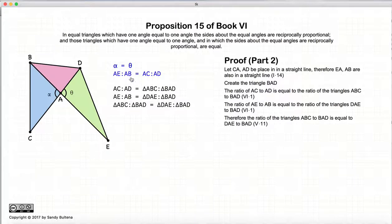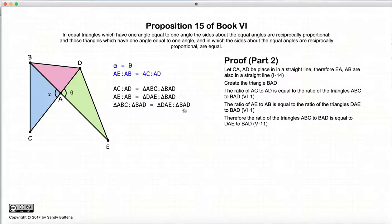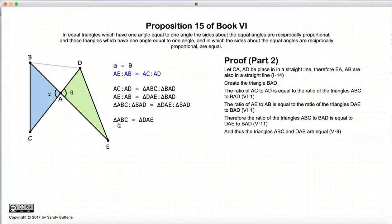Now again AE to AB is equal to AC to AD, so these two ratios are equal, which means these two ratios are equal. If we rewrite it we have that ABC to BAD is equal to DAE to BAD. But we have BAD on both sides, which means it can be eliminated, and we can clearly state via Proposition 9 of Book 5 that the area of ABC is equal to the area of DAE. Thus we have shown that if the angles are equal and the sides are reciprocally proportional, then the areas of the two triangles are equal.